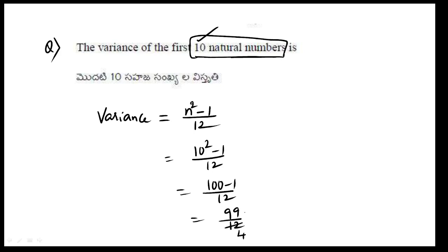Without cancellation: 3 fours are 12, 33s are there; 4 eights are 32, 10 there; 4 twos are 8, 20 there — giving 8.25. So, 33 divided by 4 gives 8.25.